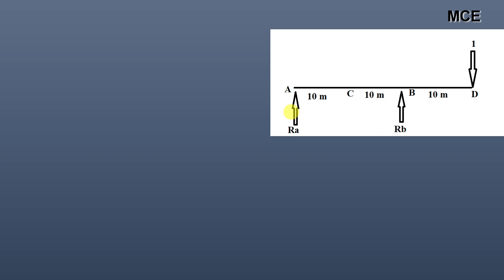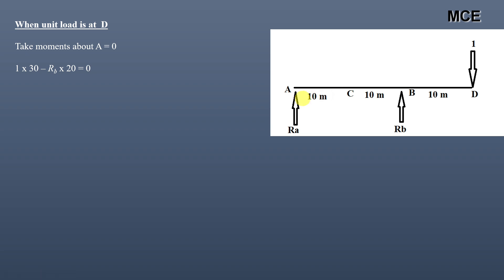Place the unit load at D. Taking moments about A equal to zero: the unit load moment is 1×30 (clockwise, positive) and RB moment is RB×20 (anti-clockwise), giving RB = 1×30/20 = 1.5 upward. For vertical equilibrium: RA + RB = 1, so RA = 1 − 1.5 = −0.5. The negative sign means RA acts downward.